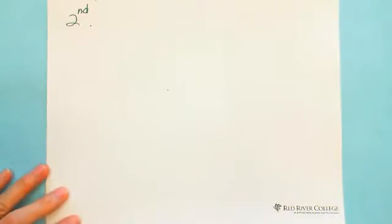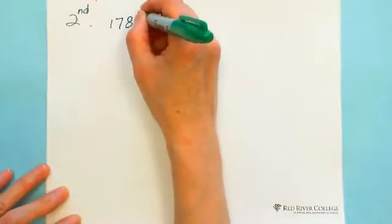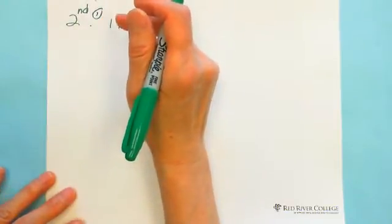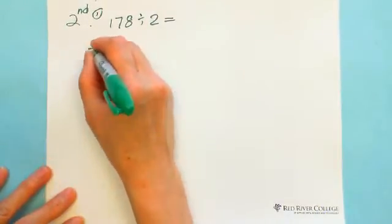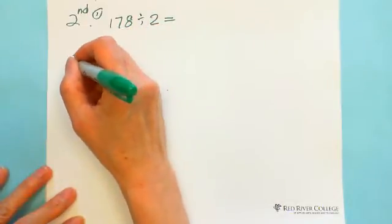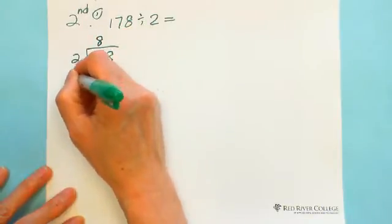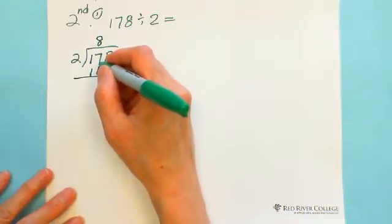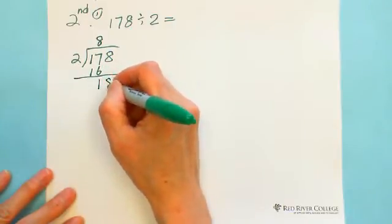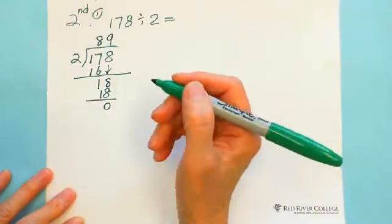The second situation is: if a number is an even number but has several other digits which are not easy to get divisible. For example, 178 divided by 2. 178 is an even number, but 1 is an odd digit and 7 is an odd digit. Because 1 is less than 2, we need to move to 2 digits. In 17, 2 times 8 is 16. The remainder is 1, so we make 18. Then 2 times 9 is 18. The answer is 89.